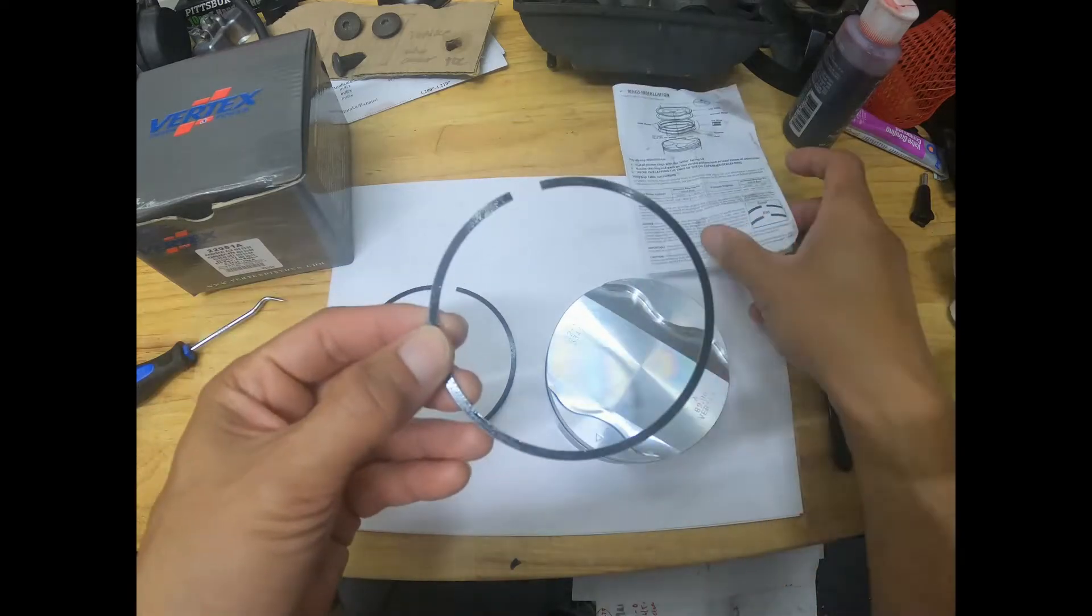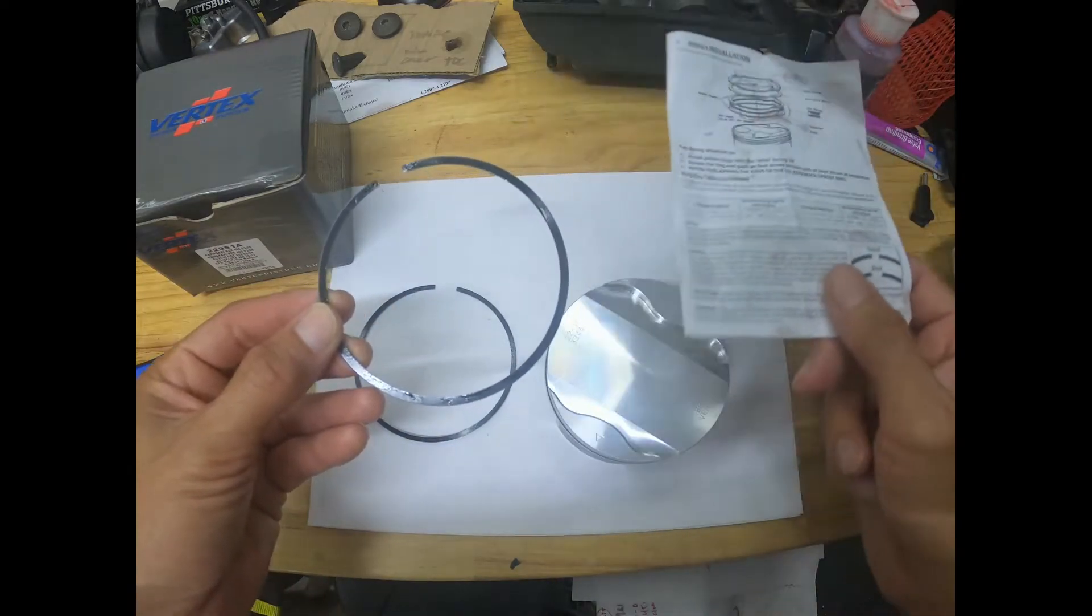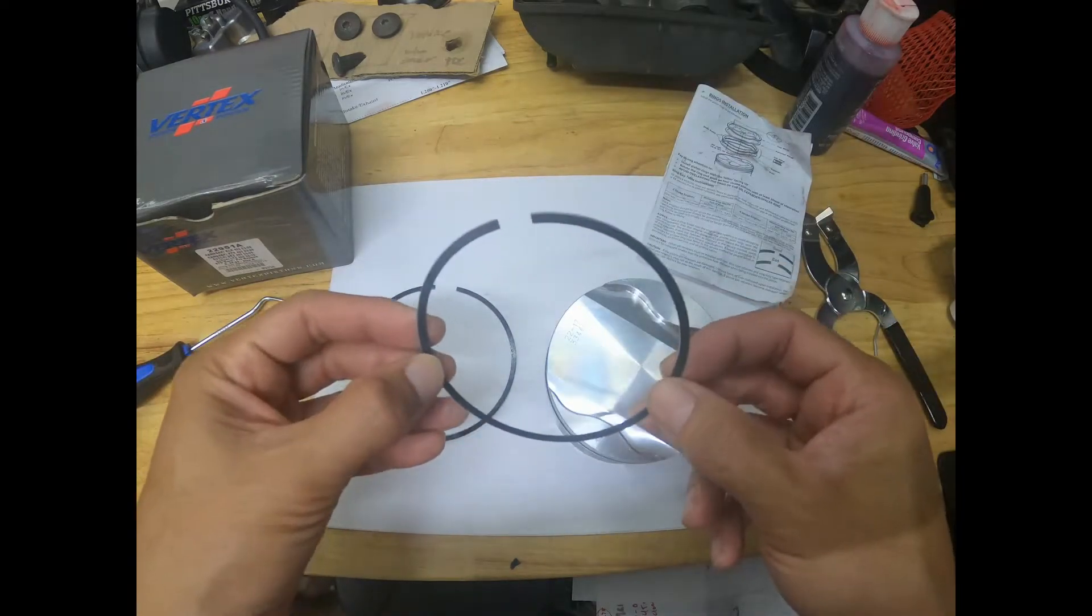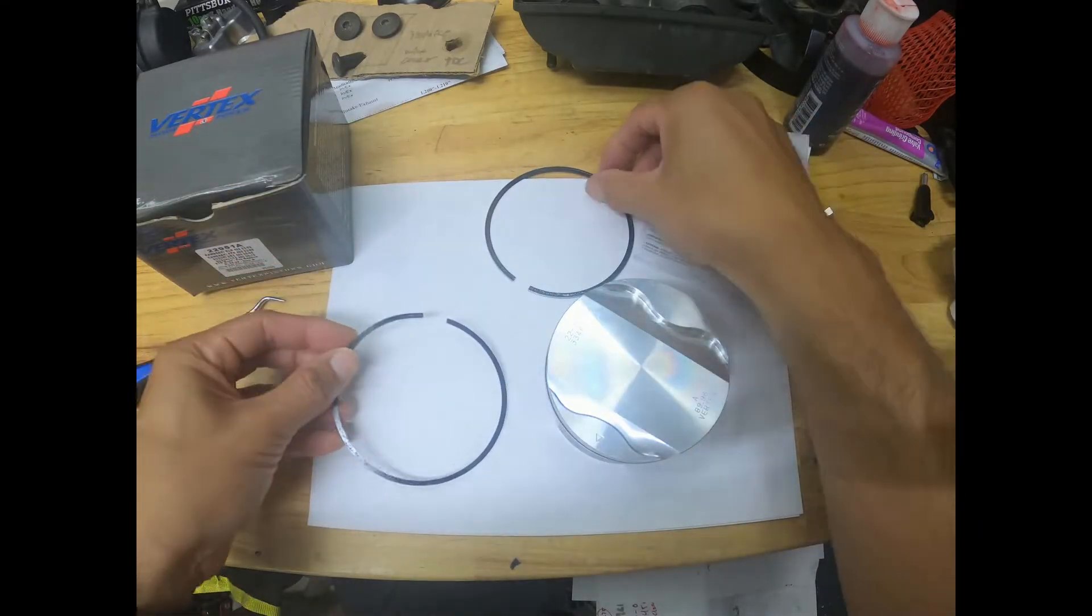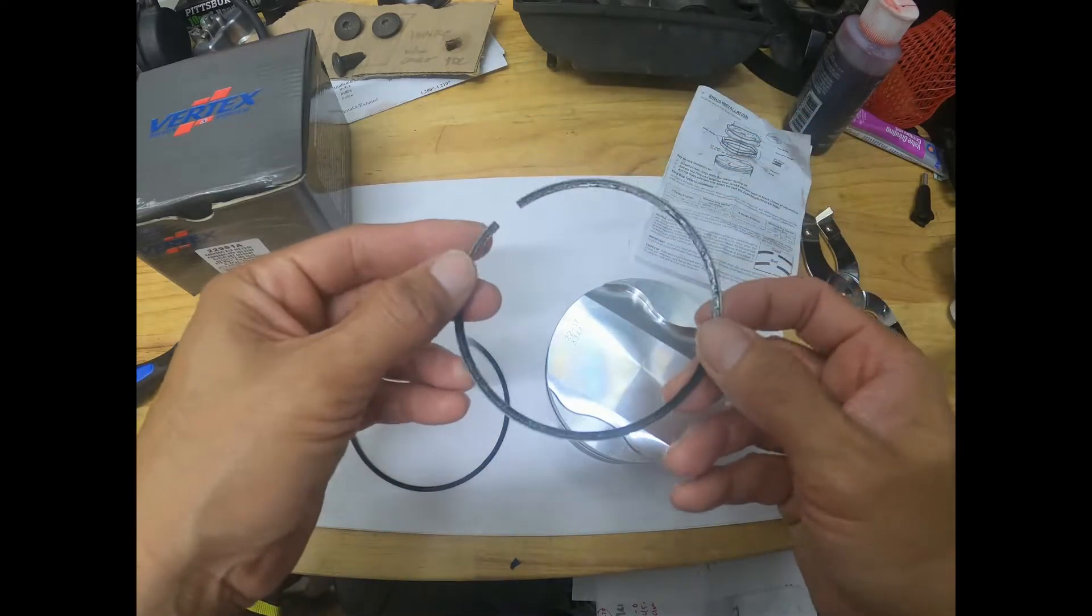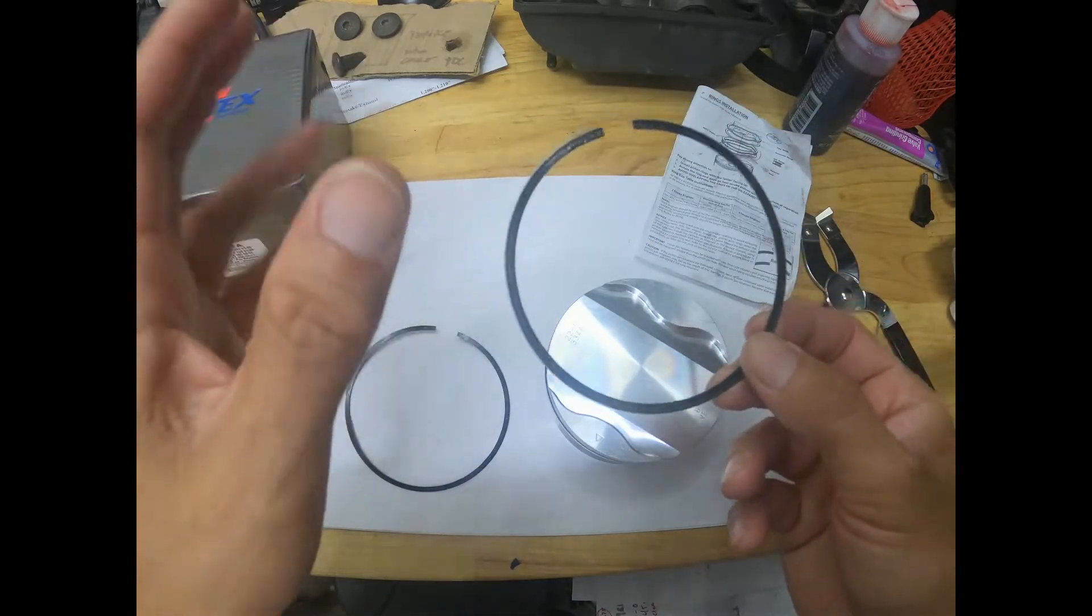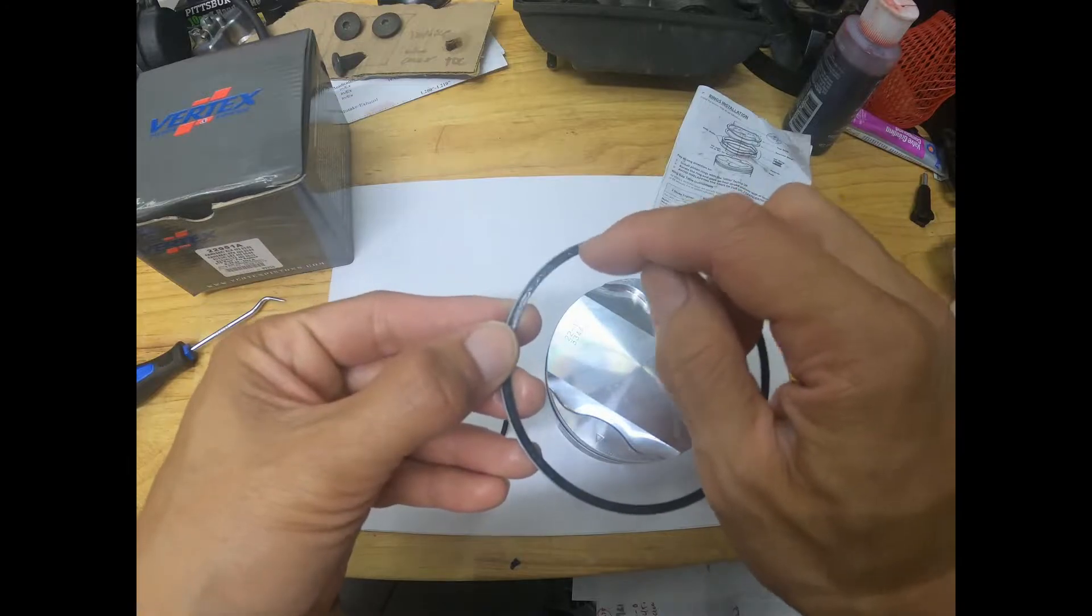Unfortunately, Vertex doesn't tell you that in the installation guide. Ring two will actually have writing on it, and ring one will have no writing or any type of marking but it'll have a bevel in there.